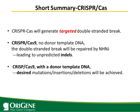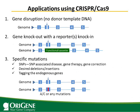A short summary: CRISPR-Cas will generate a targeted double-stranded break. If there is no donor template DNA, the double-stranded break will be repaired by non-homologous end joining, leading to unpredictable indels. If there is a donor template DNA, you can get the desired mutation — insertions and deletions.